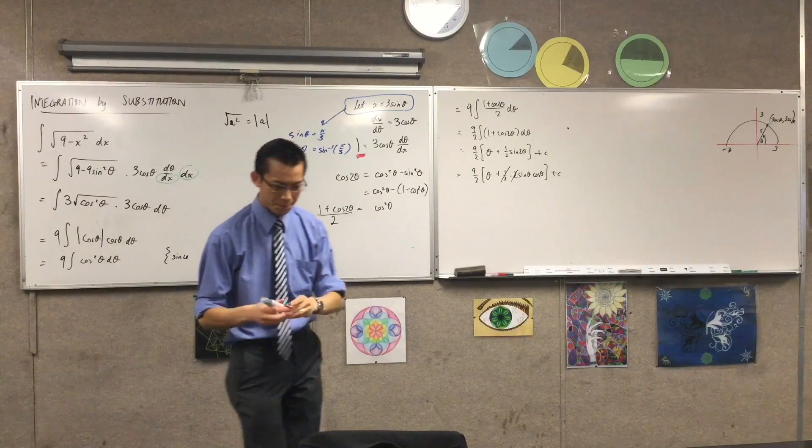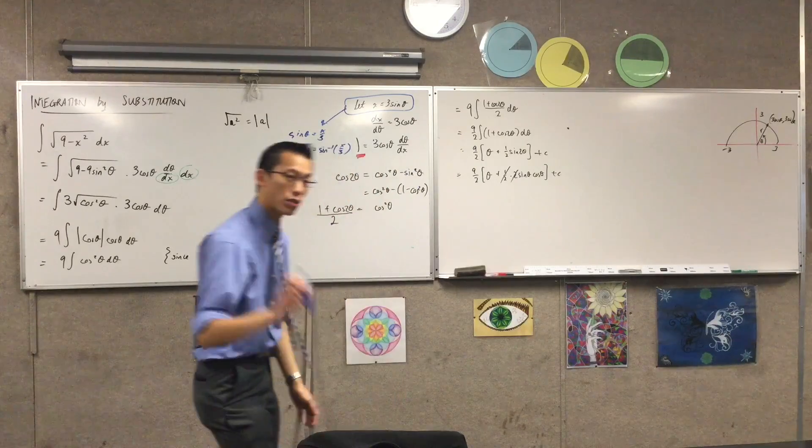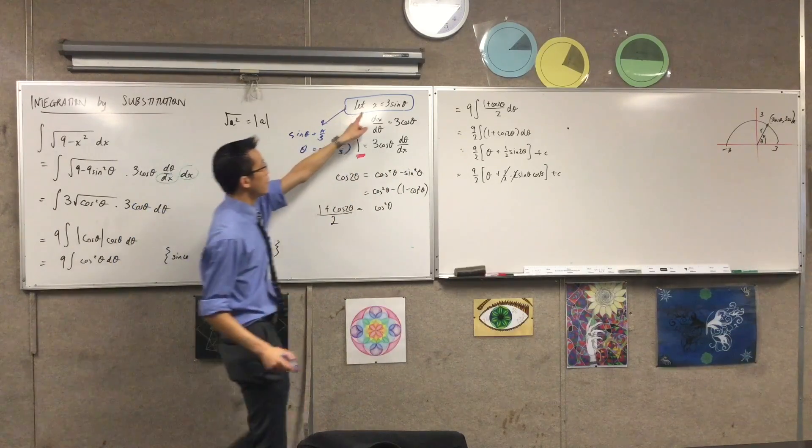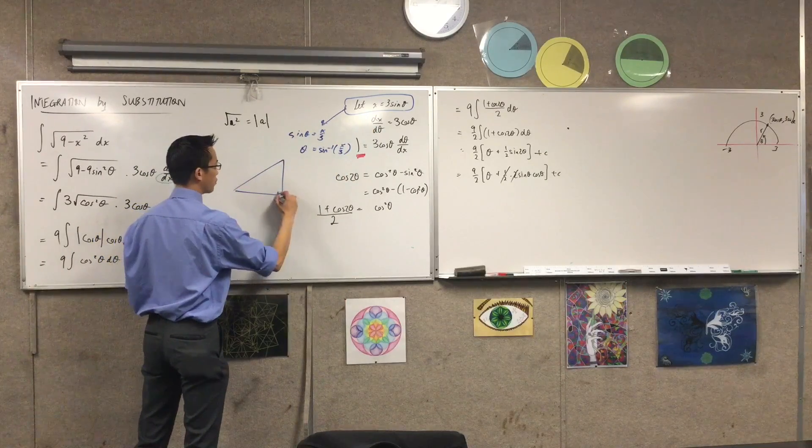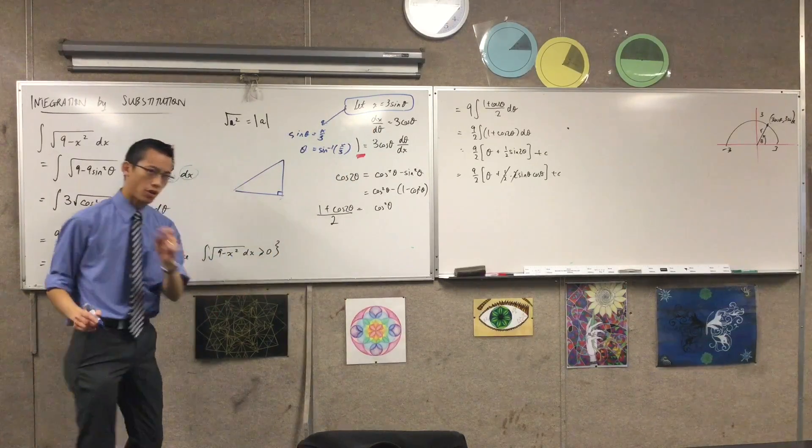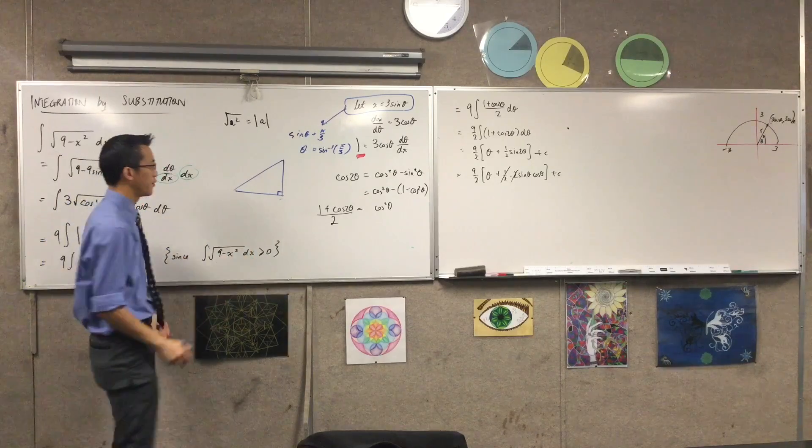So, instead, what I need to do is I need to appeal to a triangle. I have to say, look, if x is equal to sine theta, or sine theta is x on 3, I can draw a triangle that's right-angled, and again, we've got to be careful with domain restrictions, but I'll talk about that in a future example.